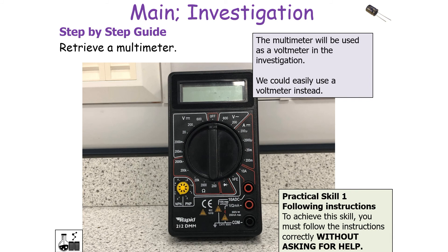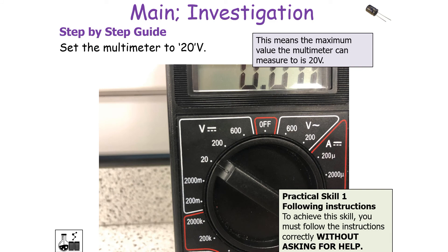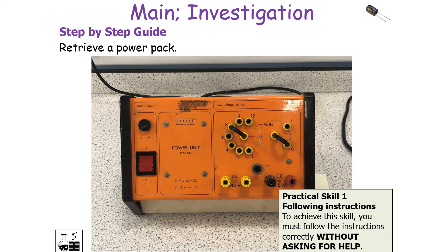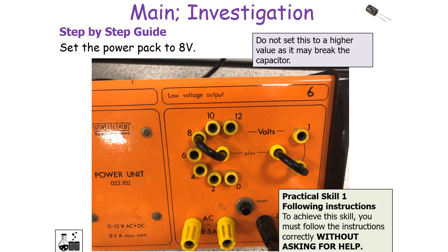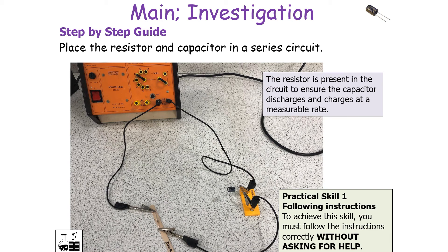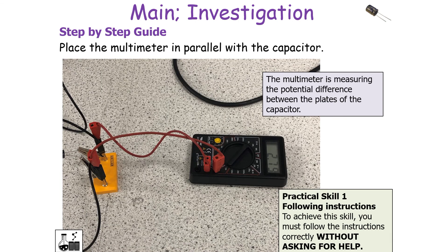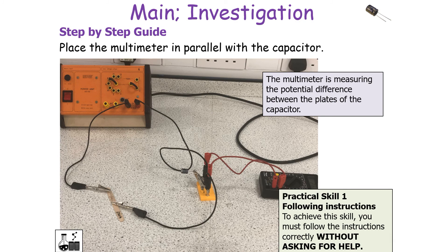Retrieve a multimeter, which will be used as a voltmeter. Connect two electrical wires to the upper holes of the multimeter and set it to 20 volts — this means the maximum value it can measure is 20 volts. Retrieve a power pack and set it to 8 volts; don't set it higher as too much charge forced onto the plates can cause the dielectric to break down. Place the resistor and capacitor in a series circuit — the resistor ensures the capacitor charges and discharges at a measurable rate. The higher the resistance, the slower the capacitor charges and discharges. Place the multimeter in parallel with the capacitor to measure the potential difference between the plates.